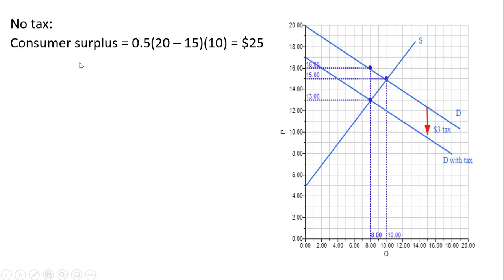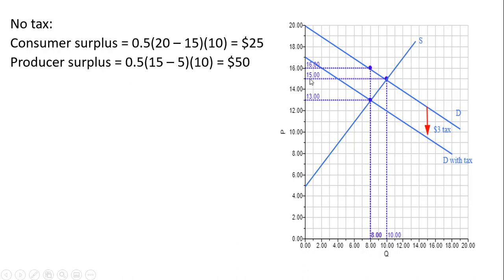In terms of consumer surplus without the tax, it's the difference between the height of the demand curve and the price buyers pay — $15 — up to the 10th unit consumed. We've got a triangle, and the area is one-half base times height: height is 20 minus 15, base is 10, giving consumer surplus of $25. Producer surplus is another triangle — the difference between $15 and the supply curve up to the 10th unit: height is 15 minus 5, base is 10, giving producer surplus of $50. Total surplus is $25 plus $50, which equals $75.